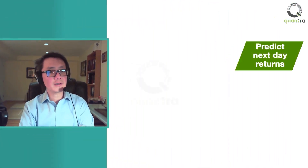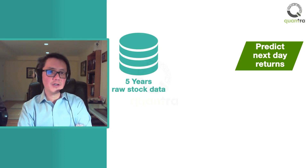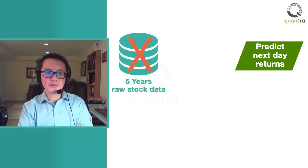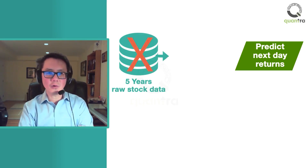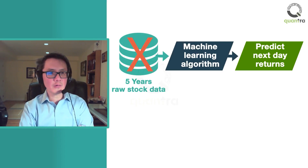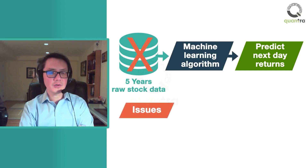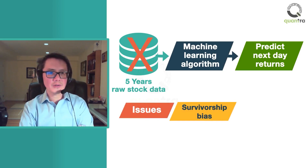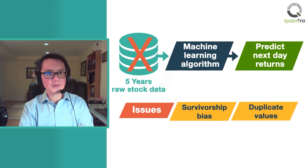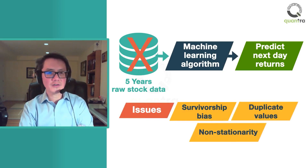For example, if you want to predict the next day's stock returns using 5 years of stock data, you can't directly feed the raw price data to the machine learning algorithms. Raw data has several issues, such as survivorship bias, duplicates, and non-stationarity.